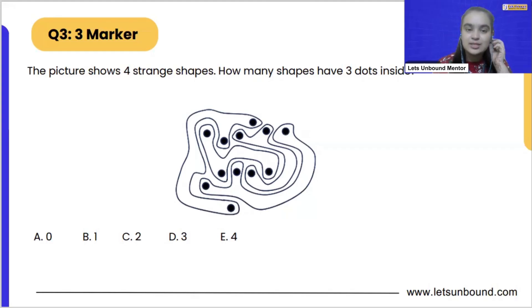So what we have to do here is we have to find out the weird shapes which are having three dots inside it. Let's start with this shape. We are going to see a shape one by one.